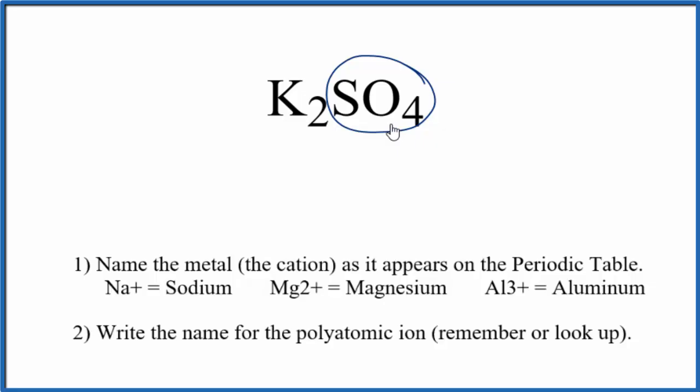So we have SO4, the sulfate ion, and it's bonded to potassium. Potassium is a metal. It's in group 1 on the periodic table. So we have a metal and this group of non-metals.